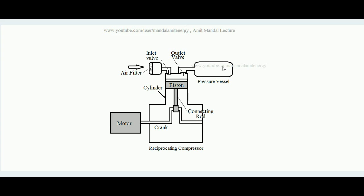This is the pressure vessel where high pressure gas is collected. The job of a compressor is to take low pressure gas and convert it into high pressure gas. In thermodynamics terms, it takes low enthalpy gas and raises its enthalpy by addition of work. Here, the compressor takes atmospheric air inside the cylinder, raises its pressure, and pushes it into the pressure vessel for collection.